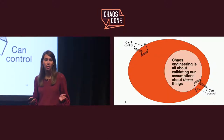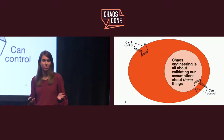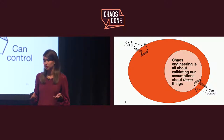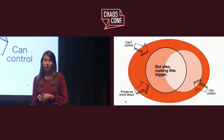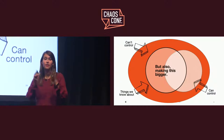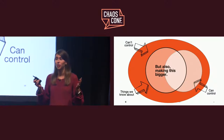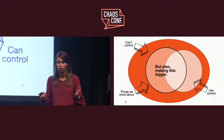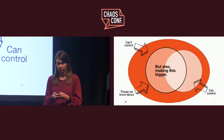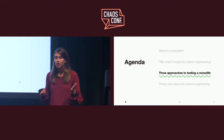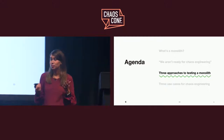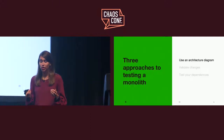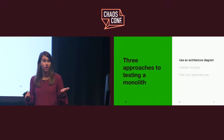Chaos engineering is all about validating our assumptions about these things — the things that we know about — but also about surfacing all the things that, if we did know about them, we could do something about them and make our application stronger. I'd like to share some approaches for starting out with chaos engineering, starting with using an architecture diagram.